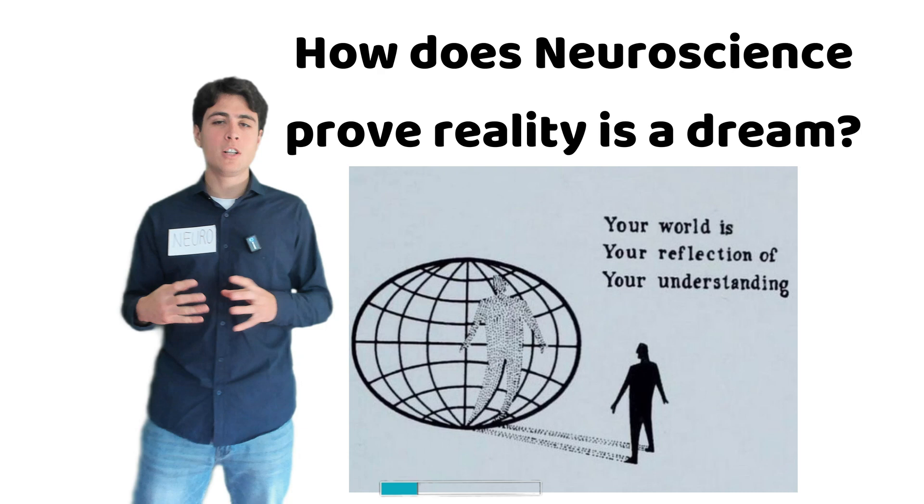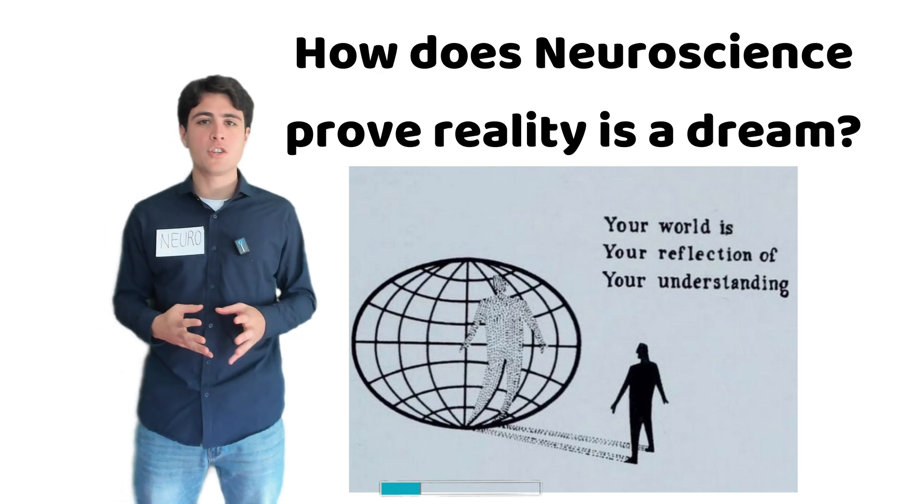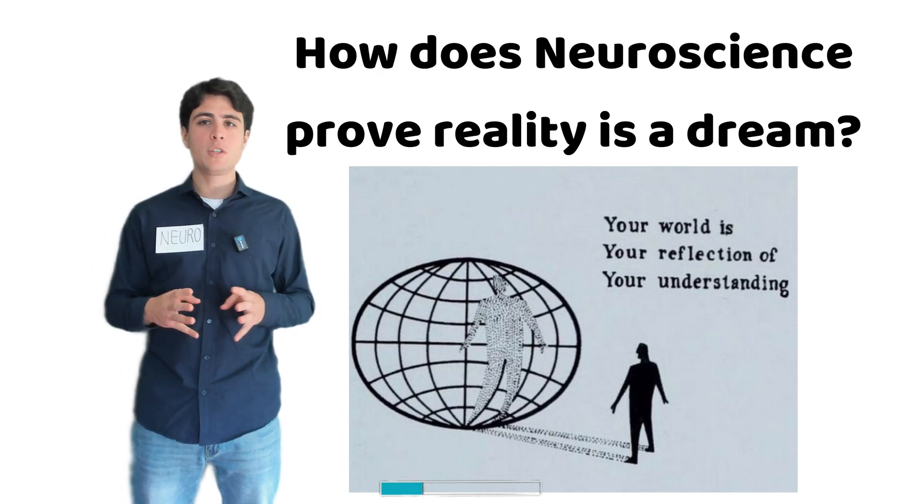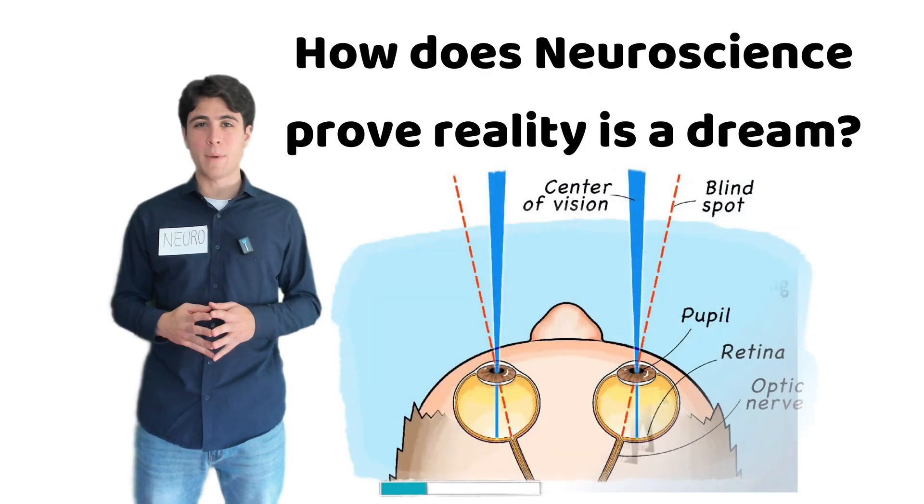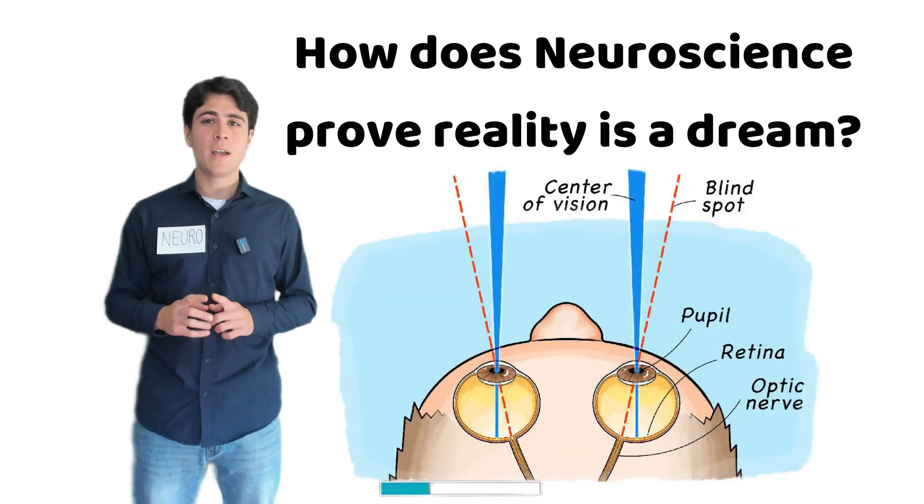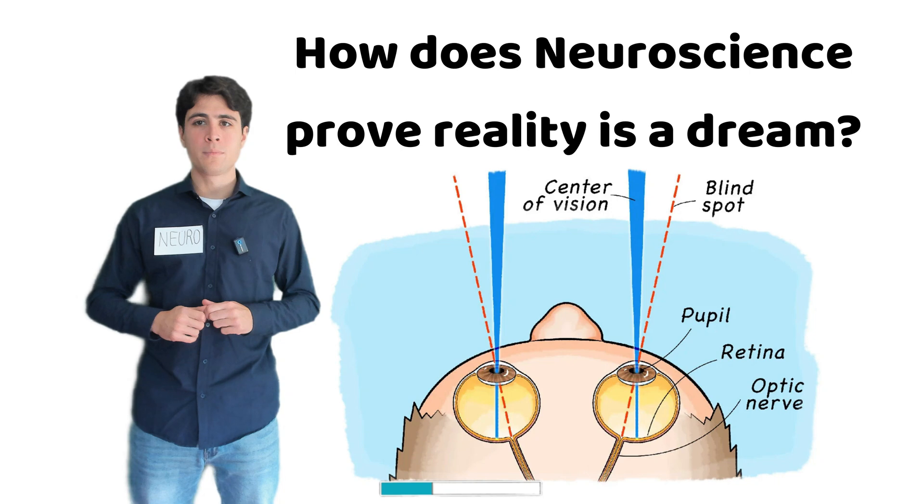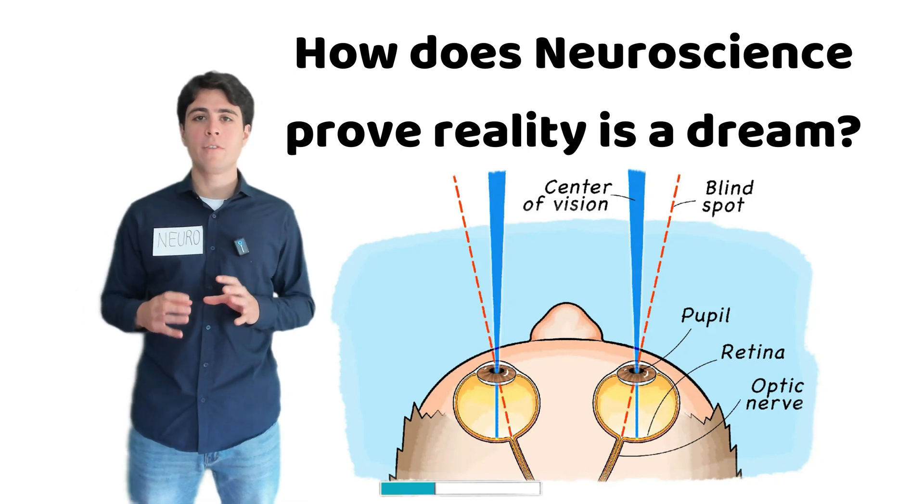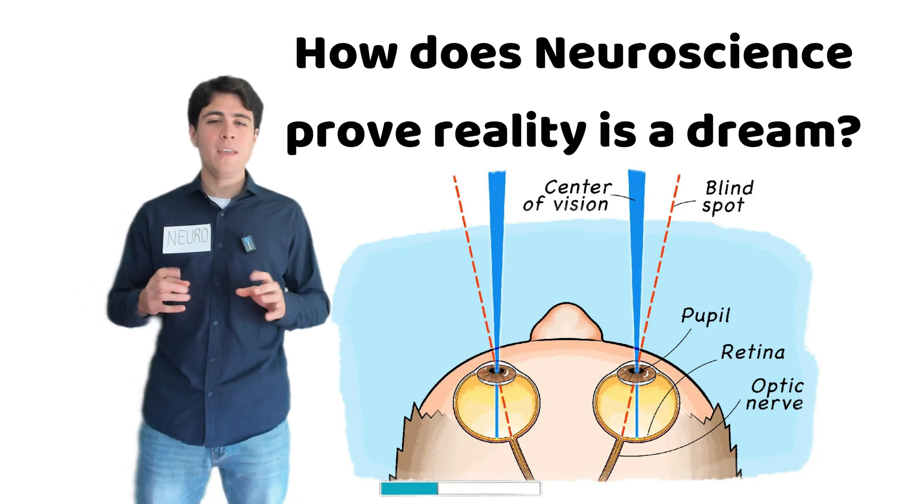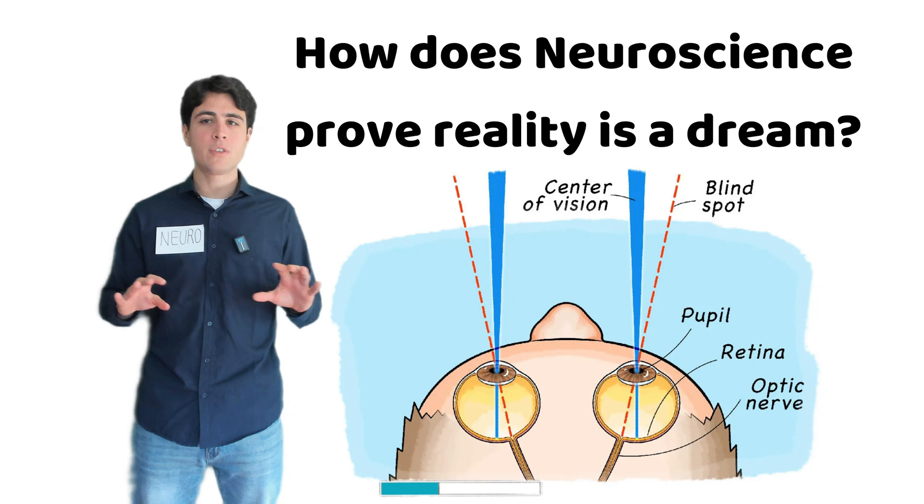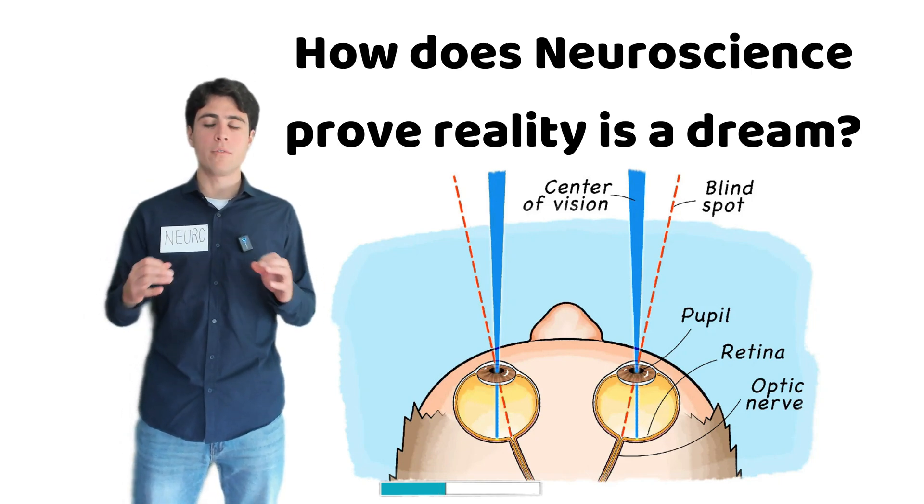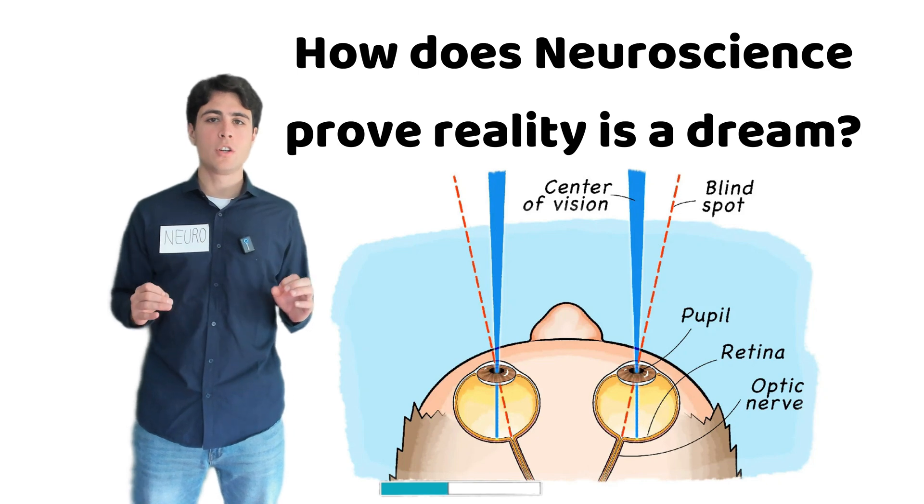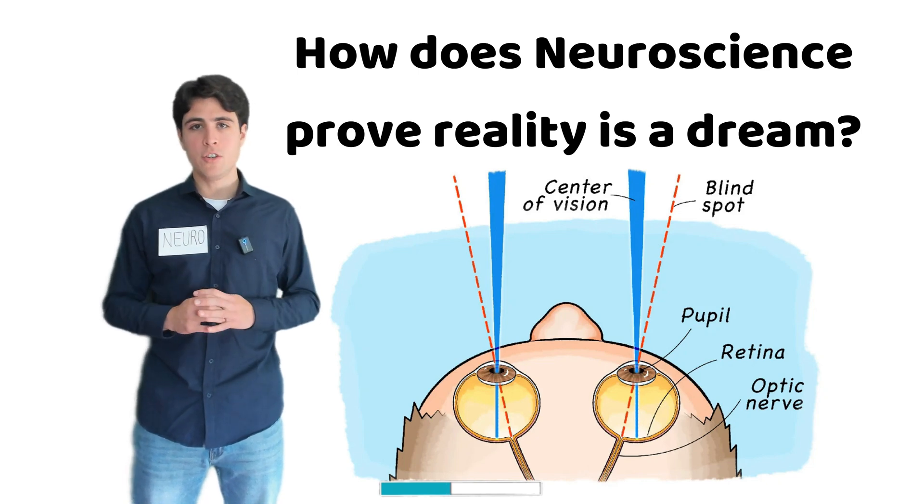And one of the clearest ways we can see this in action is through something you experience in every moment of your life. Your blind spot. In each of your eyes, there is a hole in your vision, an area where the optic nerve connects to your retina. In this spot, there are no photoreceptor cells. Meaning, there is absolutely no data coming in from that part of the world. You are literally blind in that region.